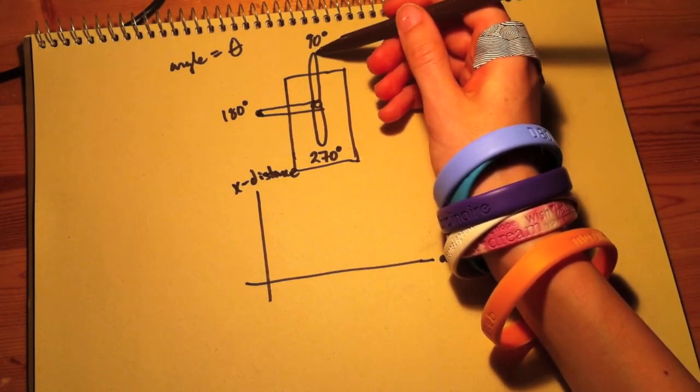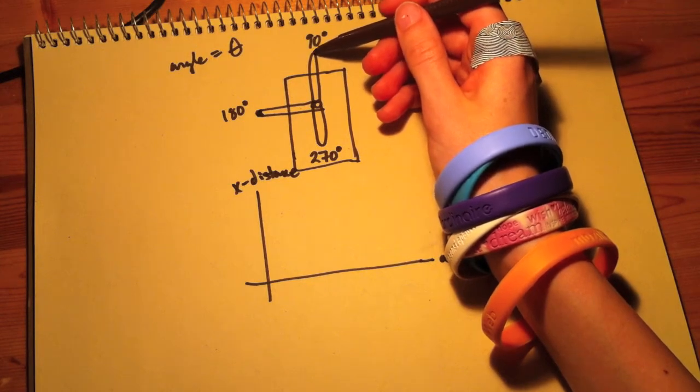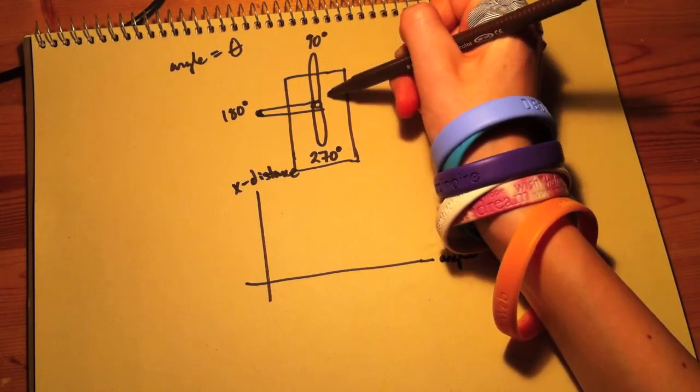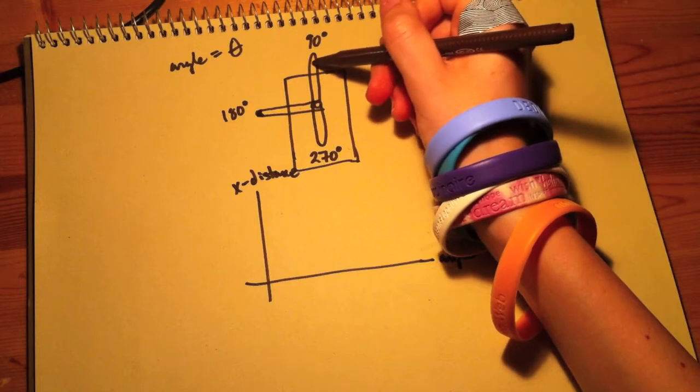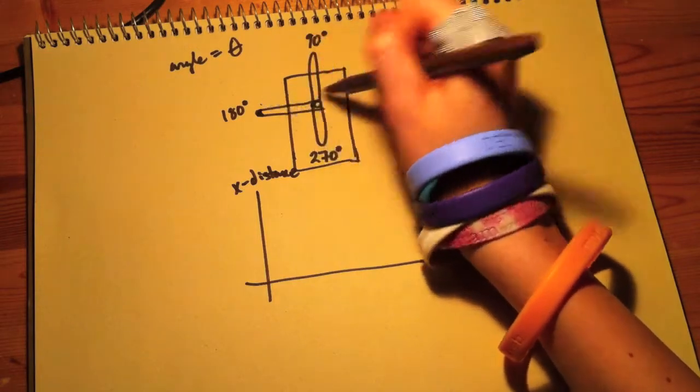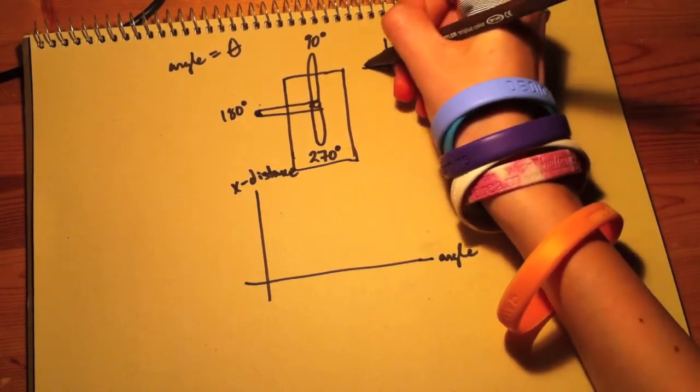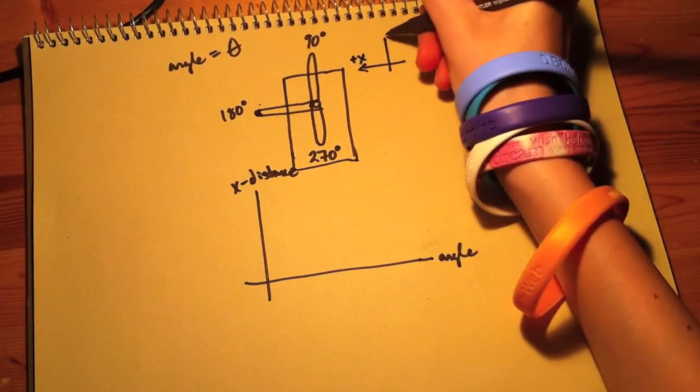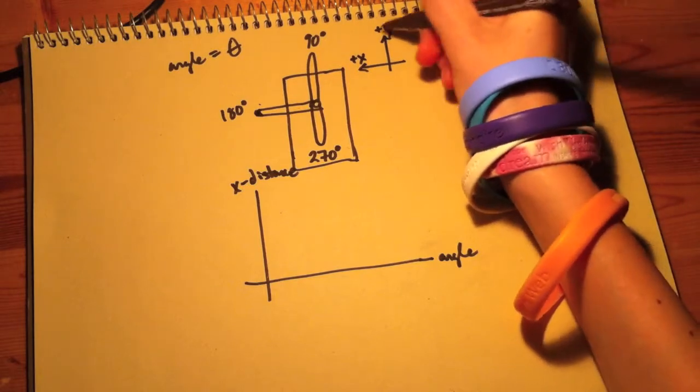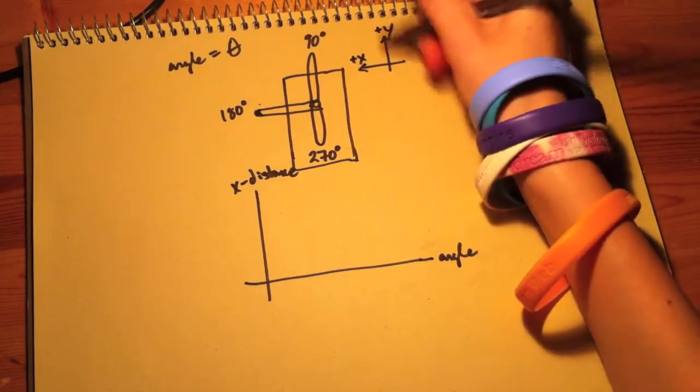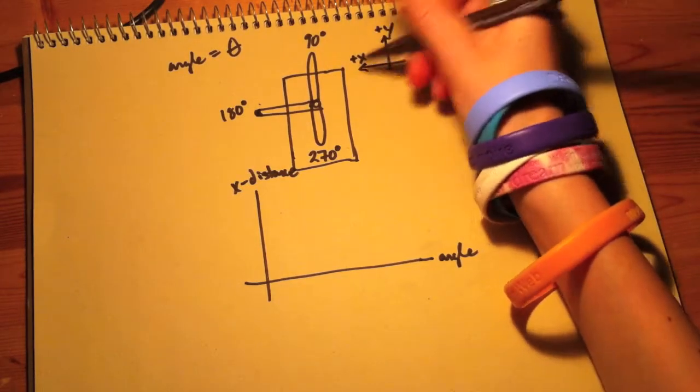And we're only going to be taking the x component, so basically the height won't matter here, it's only how far away it is going this way. So to orient ourselves, this way will be positive x and up here will be positive y, but we don't really care about y that much, only x.